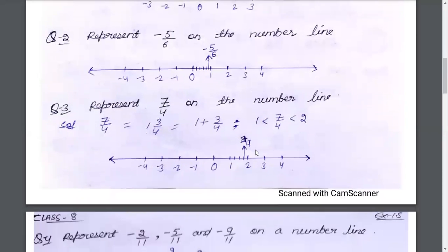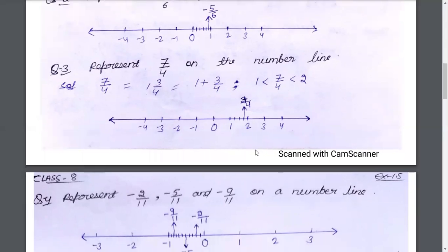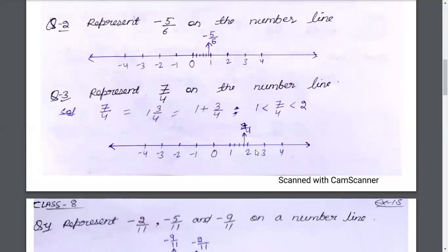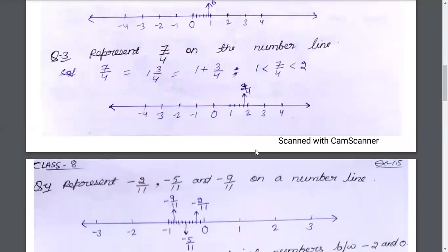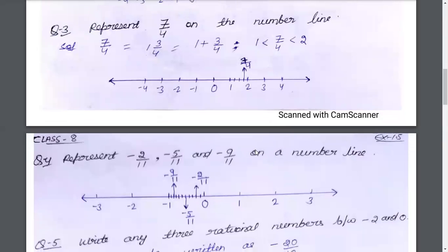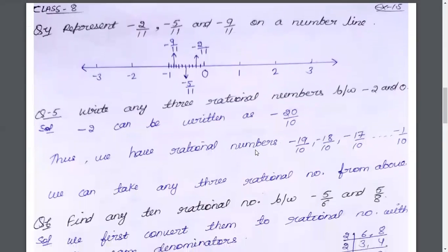Question 2 represents 5 by 6 on the number line. We have to represent 5 by 6 and minus 5 by 6. Since we have minus 5 by 6, we will move to the left. This will be between 0 and 1. I will tell you in the regular class. Question 3: represent 7 by 4 on the number line. 7 by 4 will be represented in regular class.